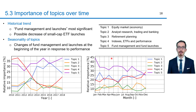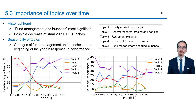The figure on the right shows the relative importance of topics per month. A noticeable trend is the increase of topic 5 in January and its decrease at the end of the year, whereas topic 4 increases at that time. This could be interpreted as changes in fund management and fund launches preferentially occurring at the beginning of the year in response to their performance.